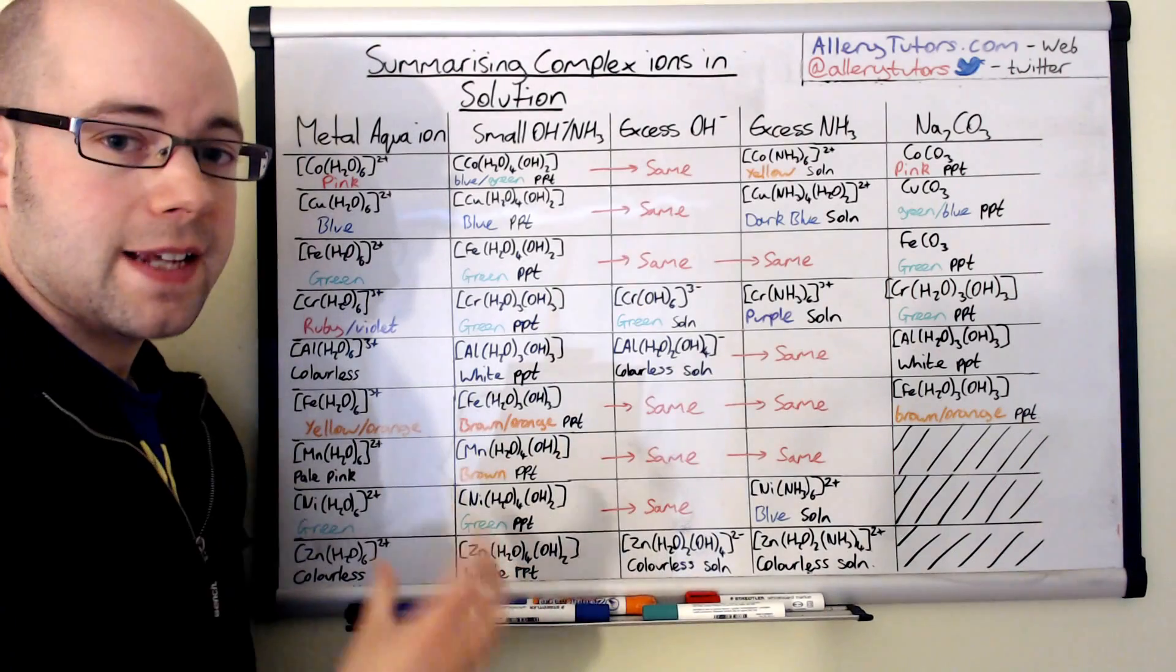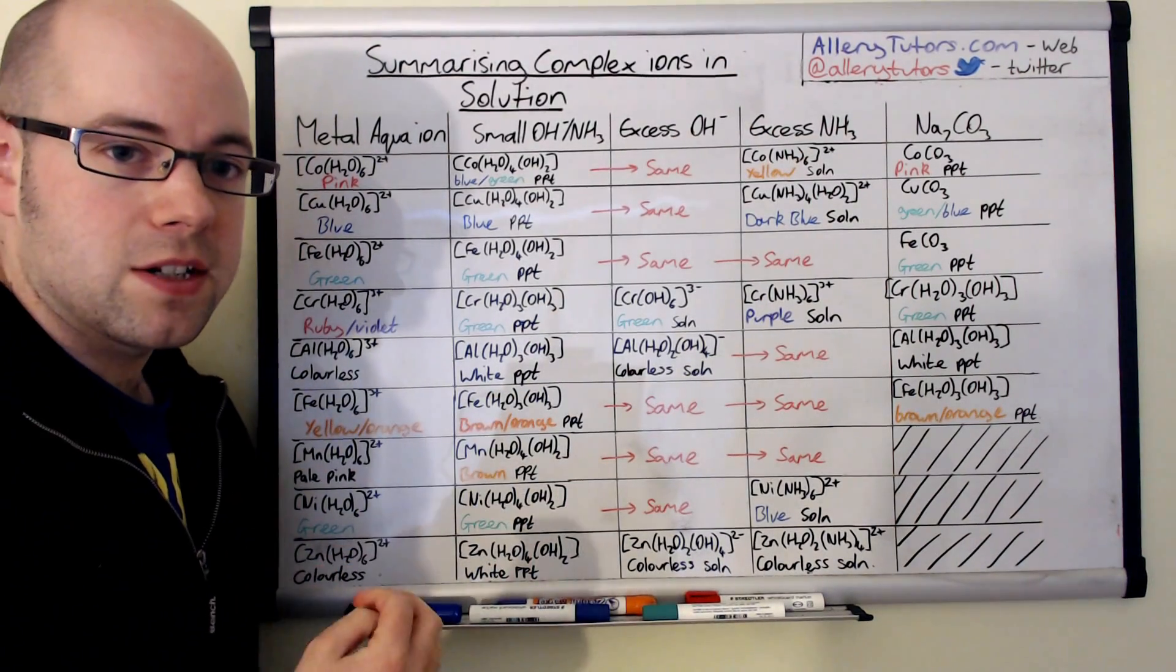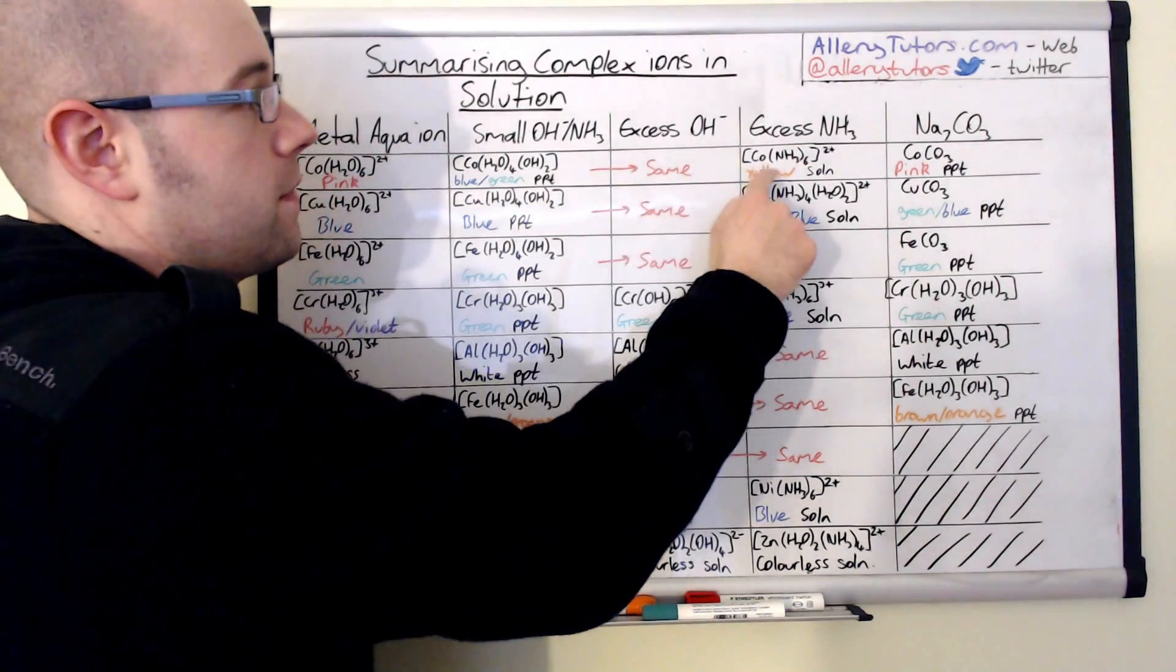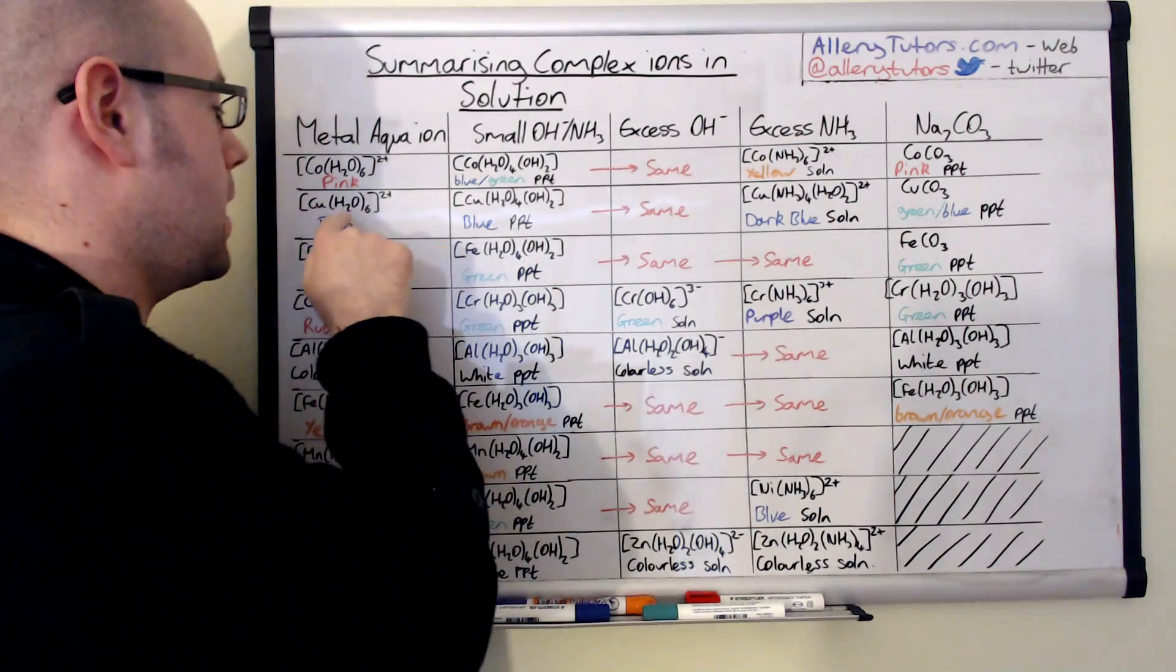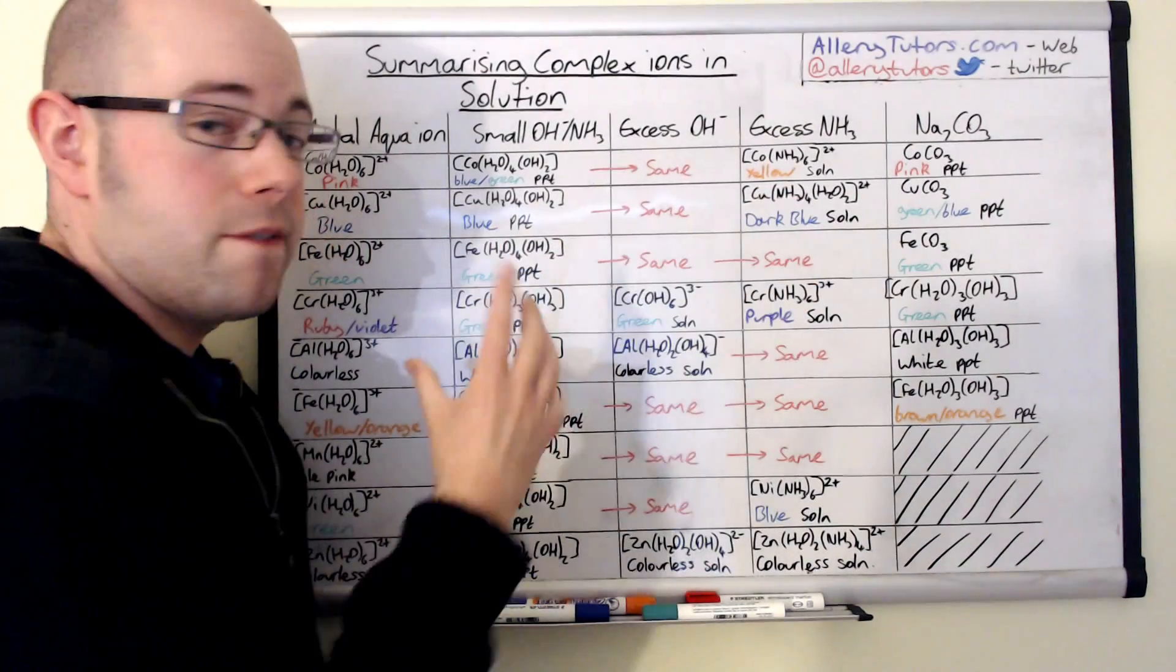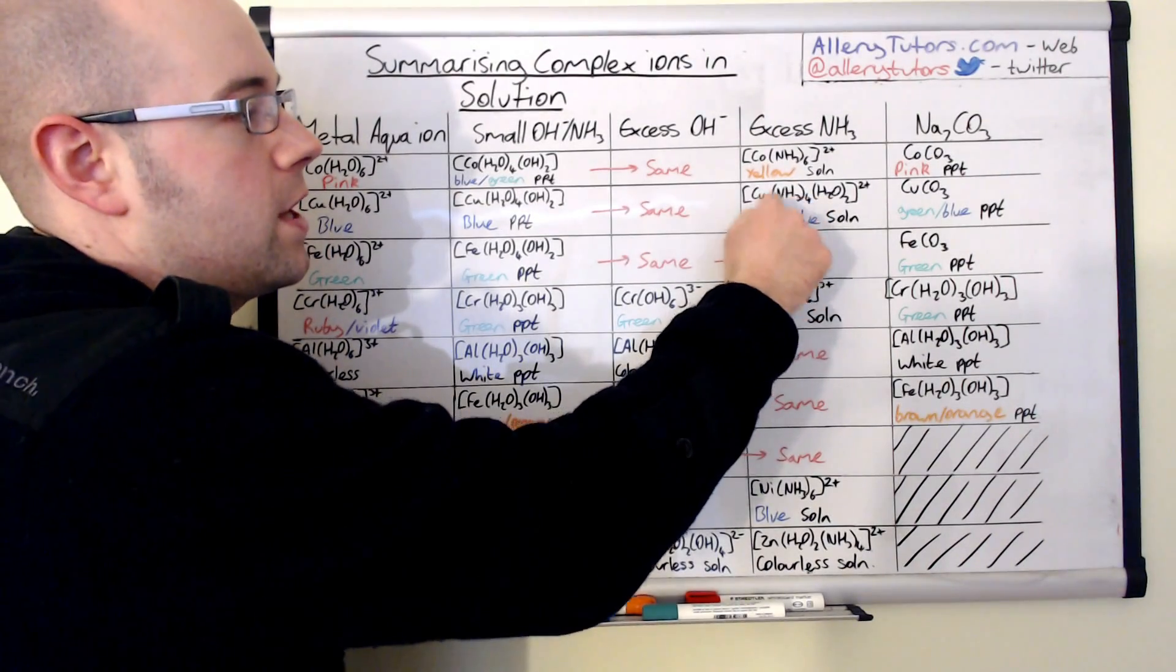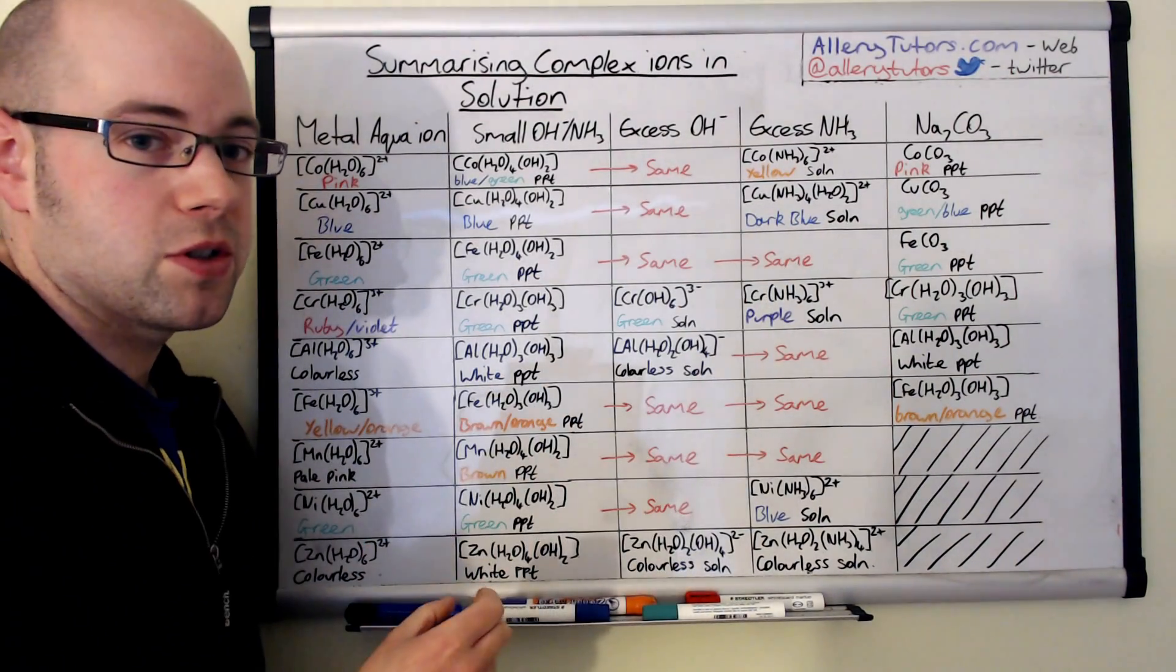If we come on to the excess ammonia, excess ammonia again will act as ligand substitution when you add excess. For the cobalt it forms a yellow solution with that hexa amine complex here. The copper one is one of the funny ones where it doesn't substitute fully and we get partial substitution, that's really important to know, and this forms a dark blue solution again because it's charged.